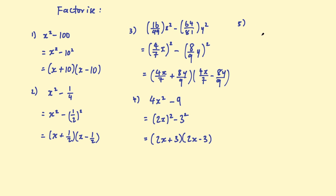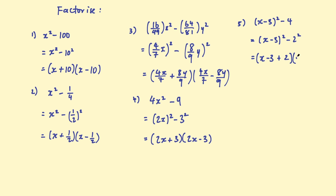A couple more examples. You might have something like (x − 3) squared take 4. The first term is something squared; the second term we can write as 2 squared. So here we have the difference of two squares. There are other ways of doing this — you could expand the brackets and then factorize — but this is a shortcut: we write this as (x − 3 + 2) multiplied by (x − 3 − 2). Then simplify: negative 3 plus 2 is negative 1, giving (x − 1), and negative 3 take 2 is negative 5, giving (x − 5).